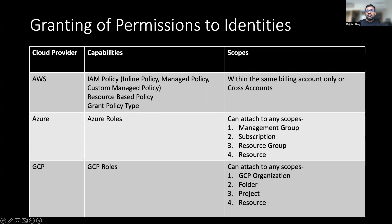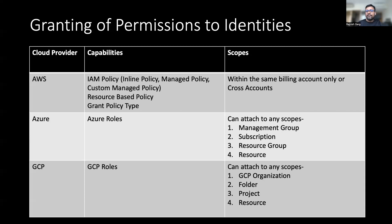In Azure and GCP, you will be assigning permission using roles, and you can attach them to a different scope. Ideally, you should be assigning the permission to the lowest possible scope. If you assign permission at the GCP organization or management group level, all projects and folders below will inherit all those permissions — which is not a good thing from a least-privilege standpoint.